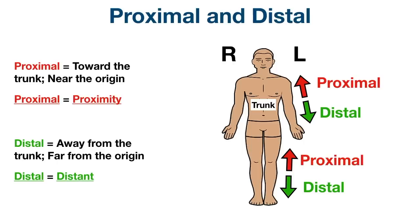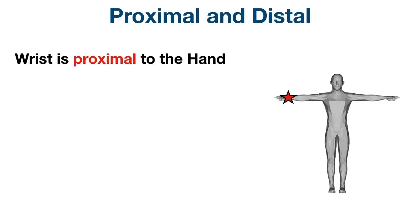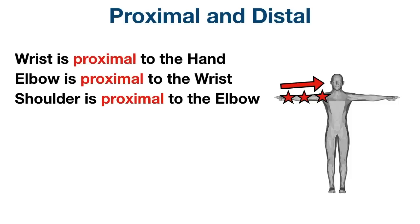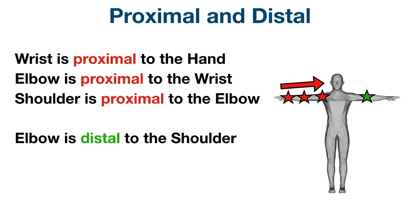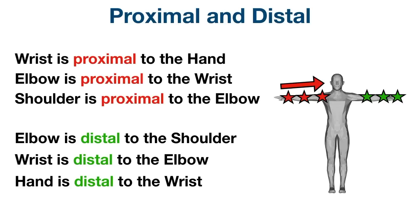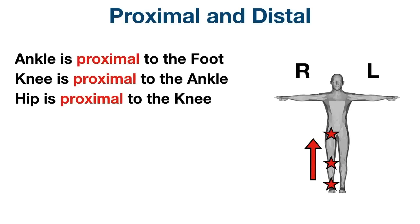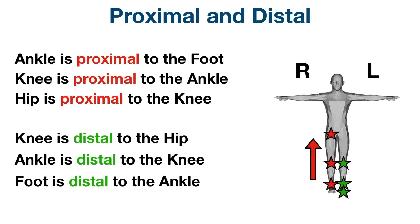The wrist is proximal to the hand, the elbow is proximal to the wrist, and the shoulder is proximal to the elbow — proximal means toward or closer to the trunk. We can also say the elbow is distal to the shoulder, the wrist is distal to the elbow, and the hand is distal to the wrist — distal means away from or farther from the trunk. For the lower extremities: the ankle is proximal to the foot, the knee is proximal to the ankle, and the hip is proximal to the knee. The knee is distal to the hip, the ankle is distal to the knee, and the foot is distal to the ankle.